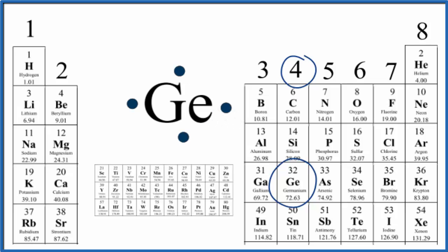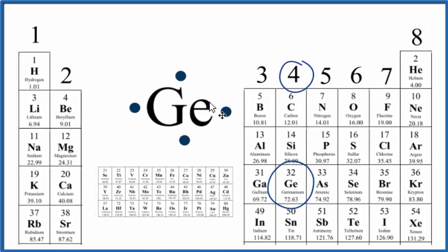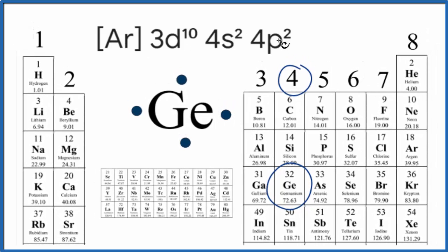The other way we can figure out the Lewis structure for Ge is to look at the electron configuration. So here's the electron configuration for Ge in a condensed form. These here are the core electrons, the noble gas core. So we really consider these to be the valence electrons for Ge.